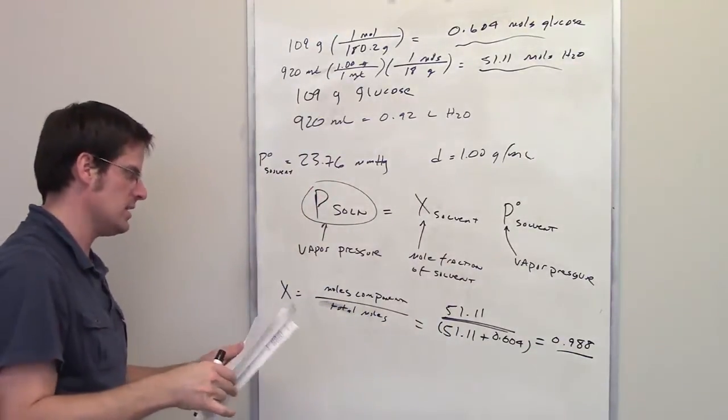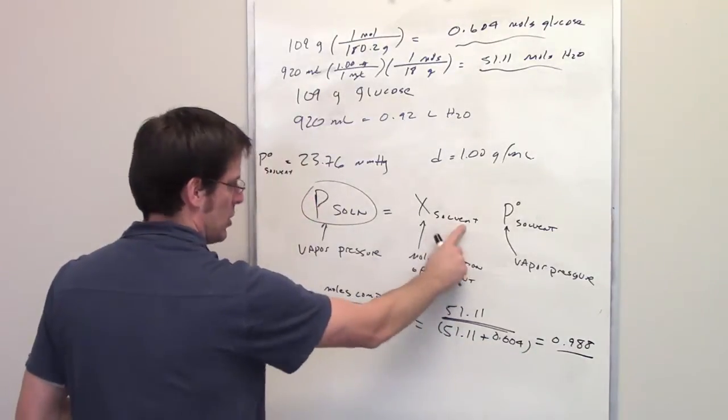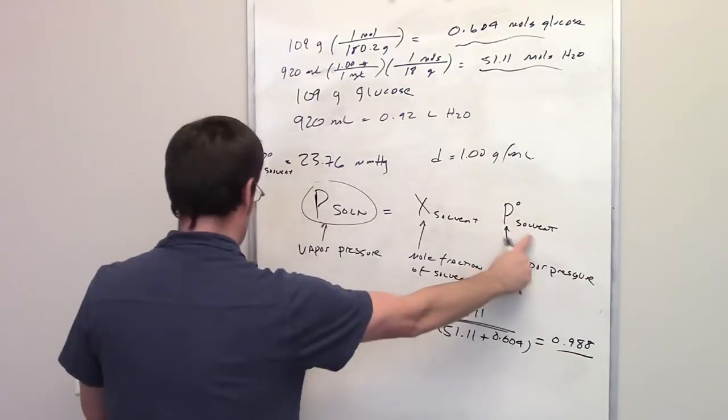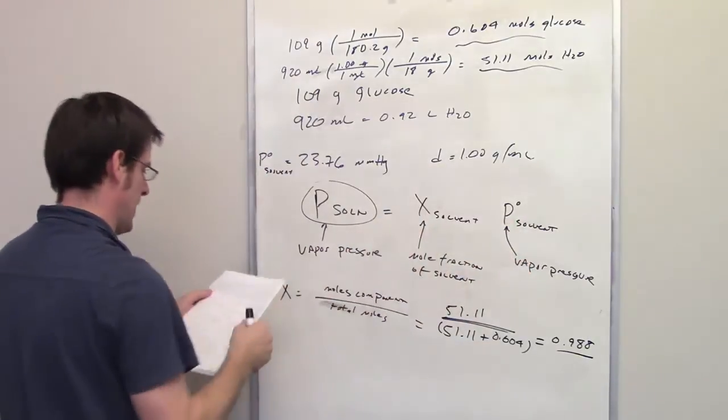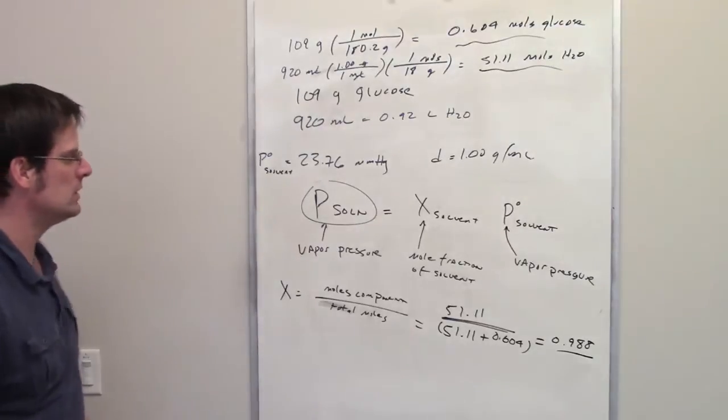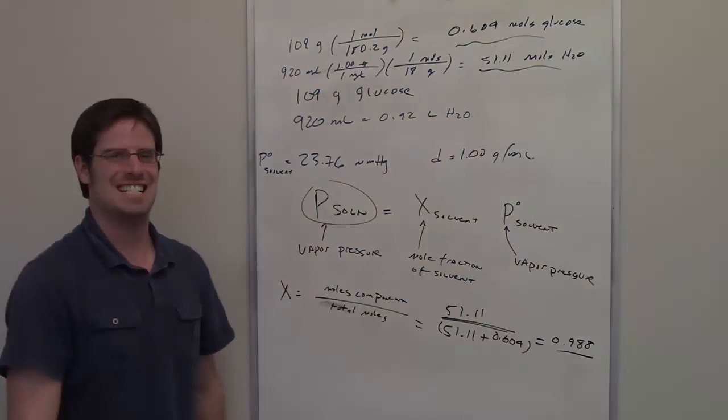All we have to do then is throw in 0.988 for the mole fraction term, 23.76 millimeters of mercury for the vapor pressure term, and multiply them together. That gives us our final vapor pressure of the new solution, and hence the correct answer. Thank you very much.